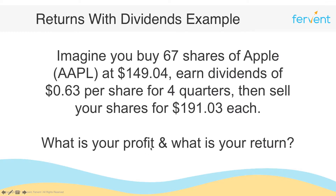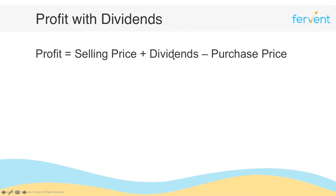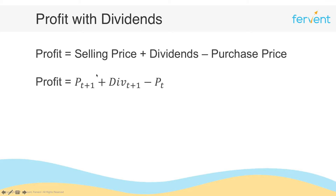To calculate the profit with dividends, the profit is the selling price plus the dividends — the total money coming in — minus the purchase price, which is the money that went out. Using annotations, the profit is pt+1 plus div(t+1) minus pt. The selling price represents income, the purchase price represents the cost, and the difference gives you your profit.